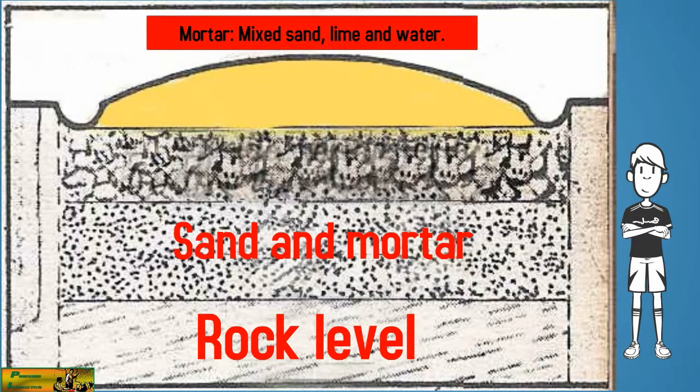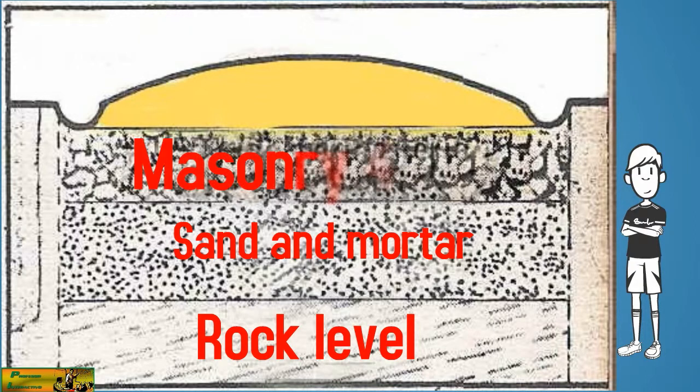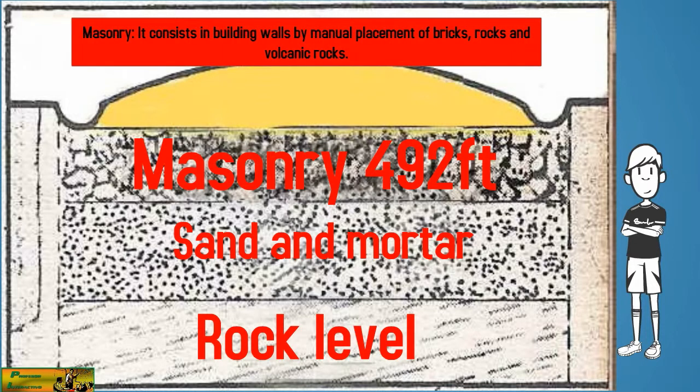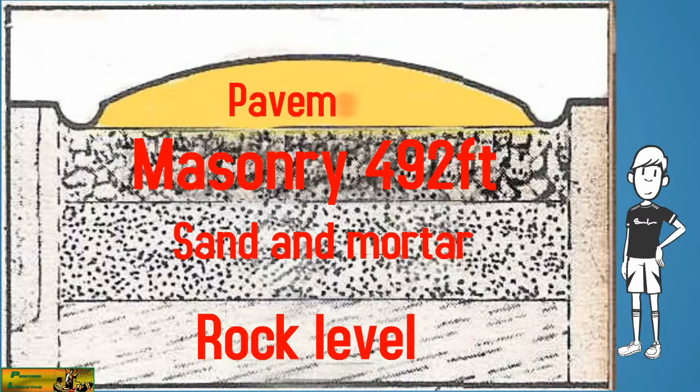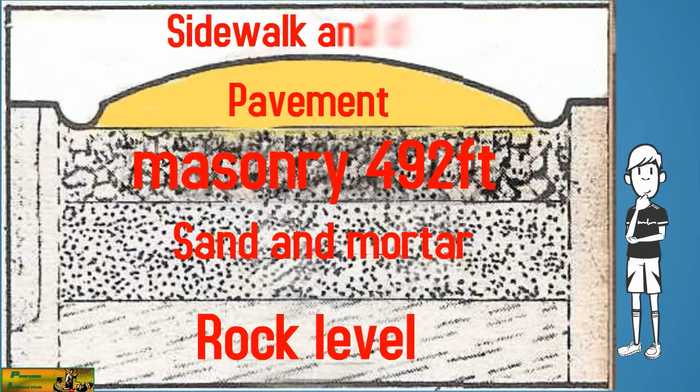Mortar mixed sand, lime and water. Masonry consisted of building walls by manual placement of bricks, rocks and volcanic rocks. Then pavement, and sidewalk and ditch.